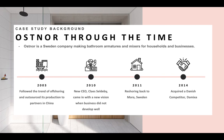In Mora, Sweden, there was a company named OSNERS making bathroom armatures and mixers for households and businesses. In 2003, when they were faced with German and Swiss competitors challenging their market leadership in Sweden, they decided to follow the trend of offshoring and outsource its production to partners in China. However, business did not develop and this relocation turned out to be a nightmare. Hence, in 2010, when the new CEO, Clay Seldebly, came in, he decided to turn back the time and had a new vision of reshoring to bring back the business to its hometown of Mora. Although several challenges arose in the process, such as the shortage of skilled labor and finding suppliers for manufactured components in Europe, they finally reshored back to Mora in 2011.